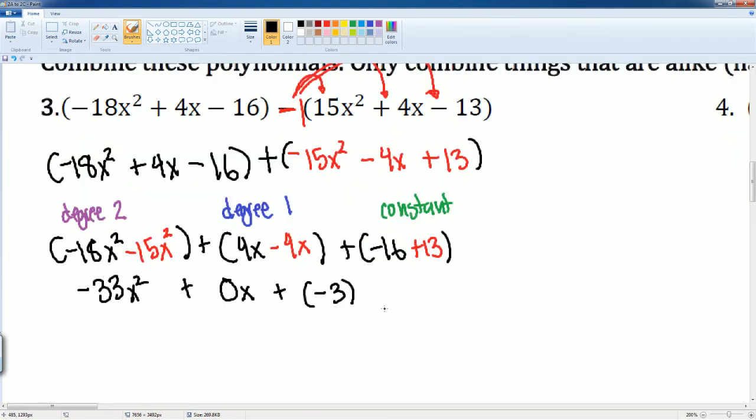We can write this neater. Nothing happens to the negative 33x squared. Do we ever write 0x? No, it just becomes 0. And we have plus negative 3. So we can just write negative 3 here. That would be the final answer.